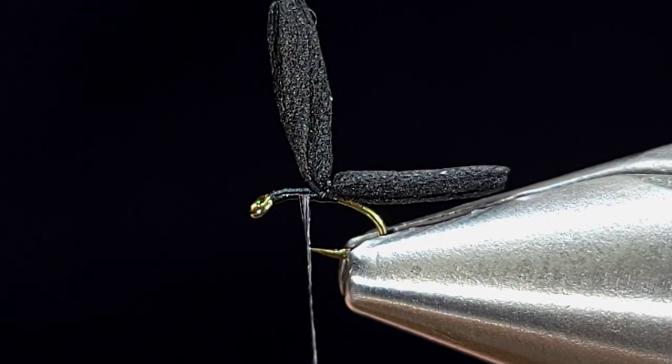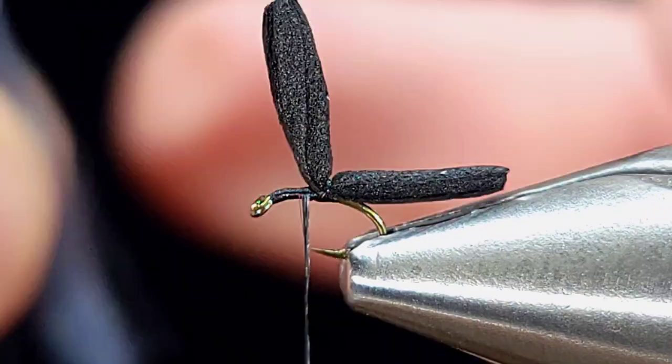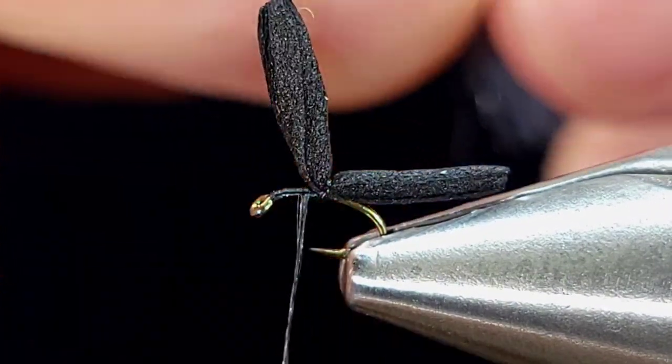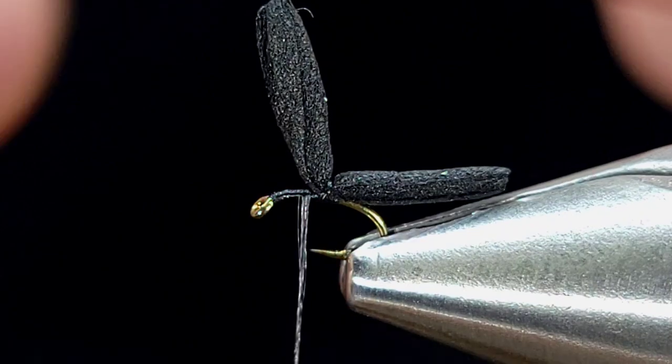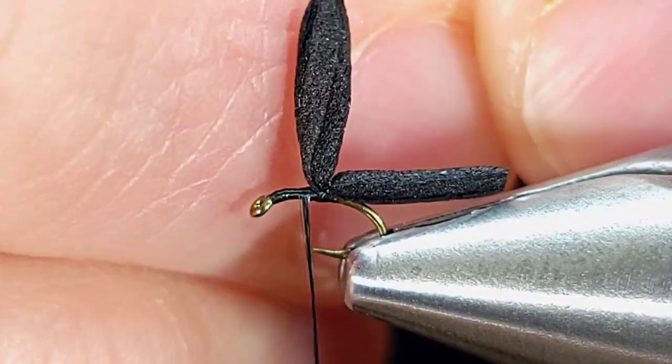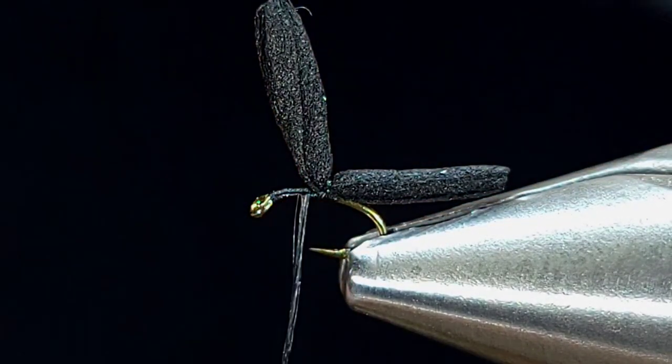For the wings on this, I'm using a one inch piece of gray Zelon, or McFly Lon in this case. I'm going to split that piece in half, and then I'm going to split the half in half again, so I'm using a quarter of one strand.